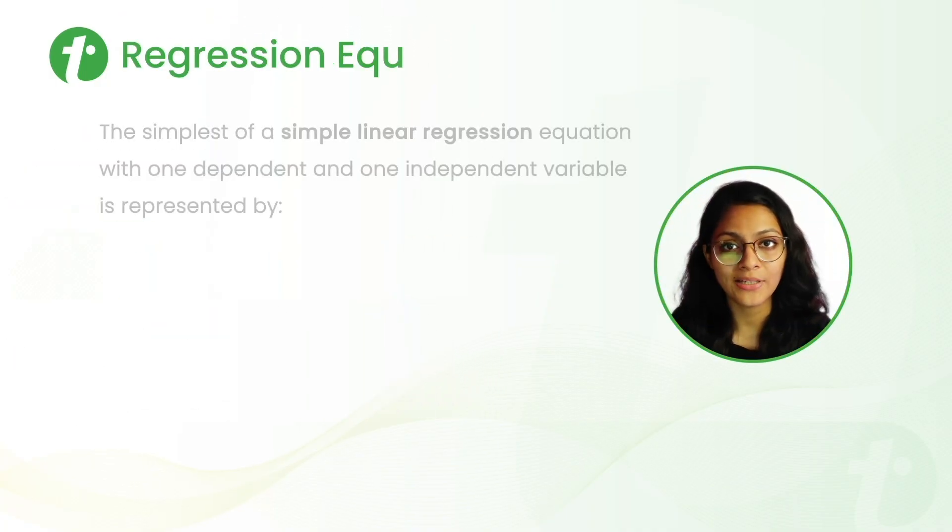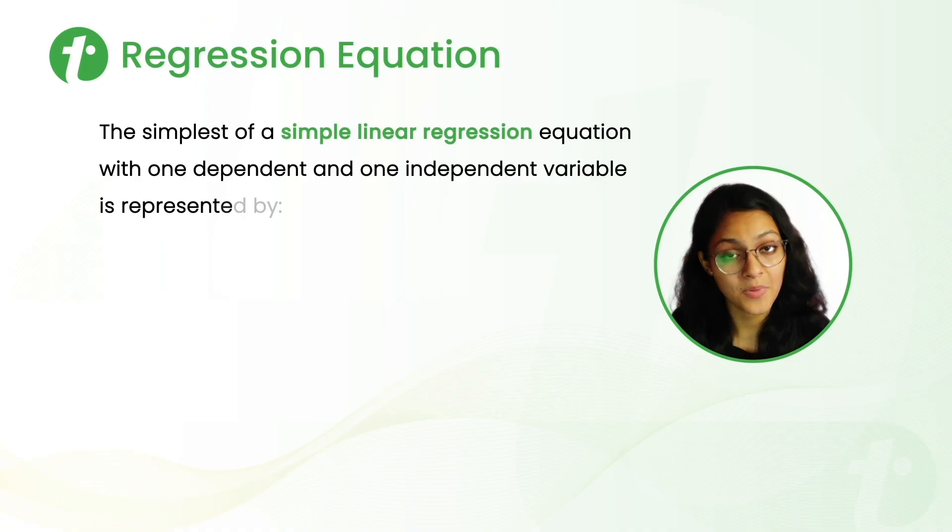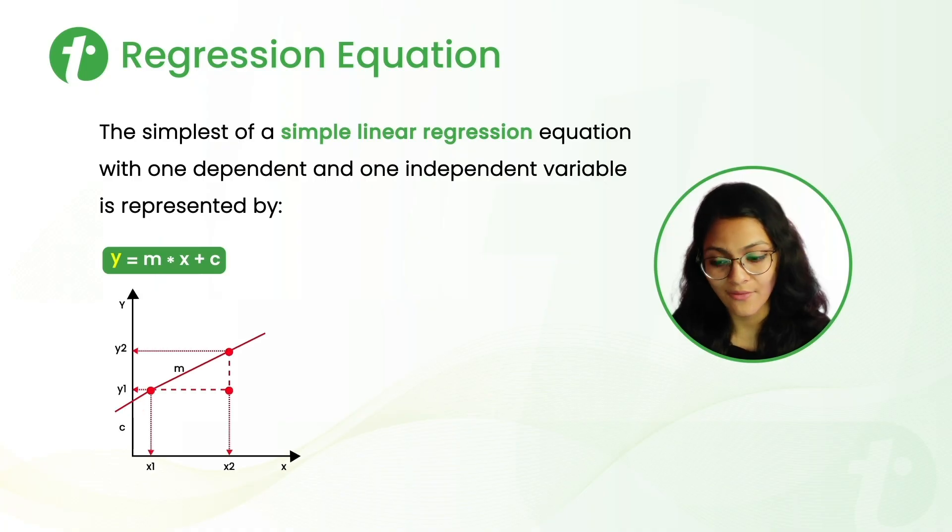Now, let's talk about the regression equation. So, the simple linear equation with one dependent variable and one independent variable is represented as Y equals MX plus C. And I am pretty sure you are familiar with this equation as this is the straight line equation passing through two points having the slope of M.